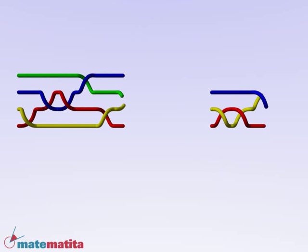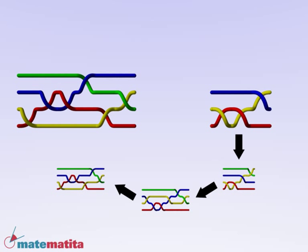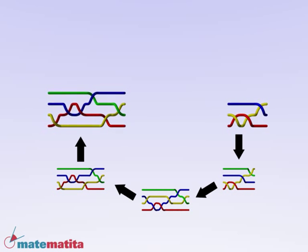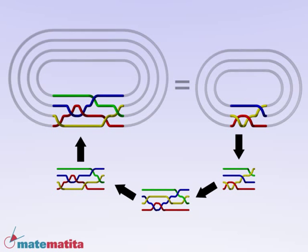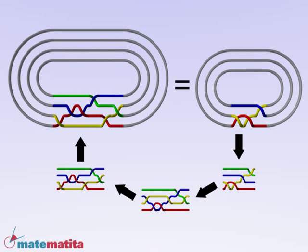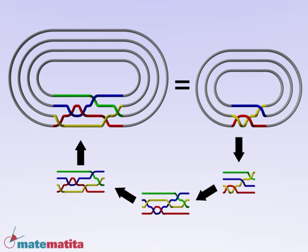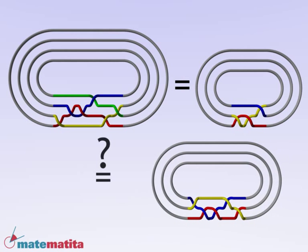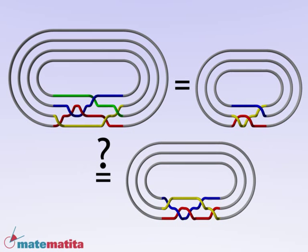Markov's theorem exactly says when two braids give the same knot, but in this form it is of no concrete use. Finding a sequence of relations can be very difficult. And, as in chapter 2, if we can't find such a sequence, it doesn't mean that none exists.